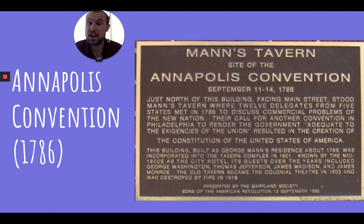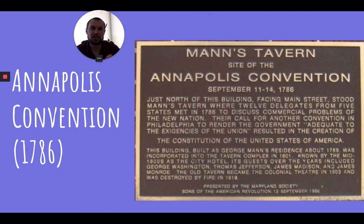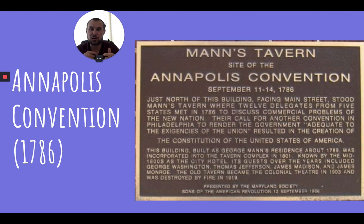If you guessed Alexander Hamilton, you are 100% correct. Alexander Hamilton and his new friend James Madison came together at the Annapolis Convention — only five states and 12 representatives attended to discuss interstate trade. But what occurred was an agreement to meet the following year in Philadelphia to solve the problems Congress had. This would be called the Constitutional Convention.